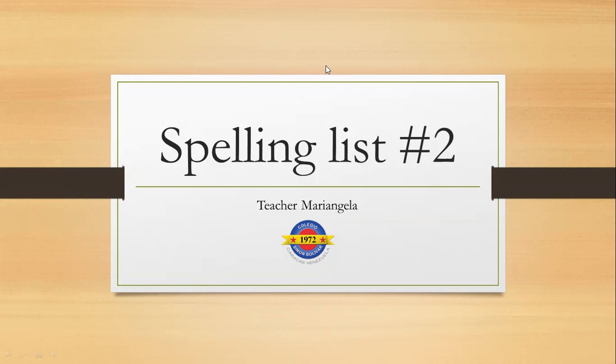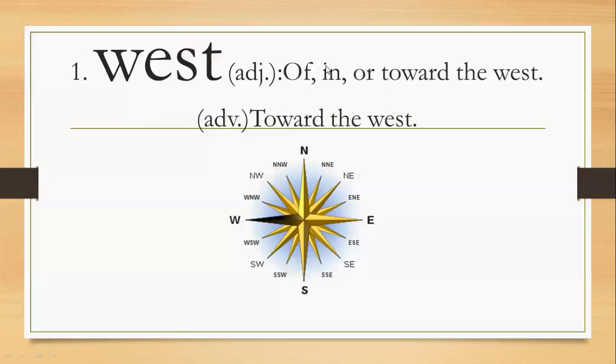Spelling list number 2. West, W-E-S-T. It's an adjective meaning off in or towards the west. As an adverb, towards the west. West is actually a cardinal direction. At the top we have north, down we have south, east on our right, and left is west.